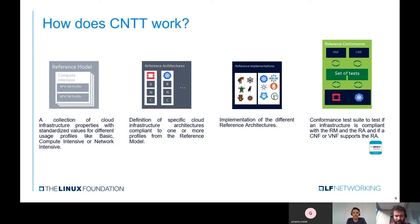Based on this technology-agnostic reference model, there are different reference architectures created, which are cloud infrastructure technology-specific definitions on how to build infrastructures compliant with the reference model. In practical terms, this means we have an OpenStack-based reference architecture and a Kubernetes-based reference architecture. Both of them take input from the reference model and describe how to build a cloud infrastructure compliant with its requirements.